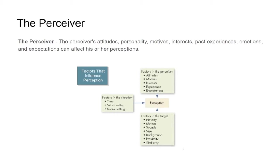If you buy a new Ford Mustang, suddenly you see all kinds of Mustangs you never noticed before. That's because of similarity — what you have versus what everyone else has becomes similar. So if we were to analyze what influences perception, we look at the perceiver, the target, and the situation.